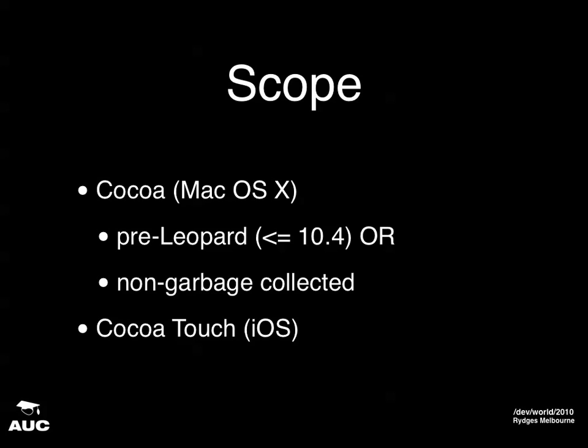In Mac OS X 10.5 Leopard, the option to use garbage collection was introduced in Cocoa, but before that it wasn't available. In practice, most Mac code still doesn't use automatic garbage collection — partly out of habit, because people want their code to be backward compatible, Xcode doesn't turn on garbage collection for new projects by default, and a big reason is people want their code compatible across platforms including iOS.